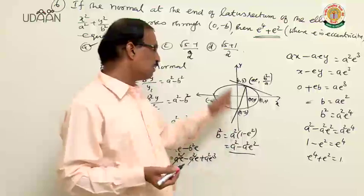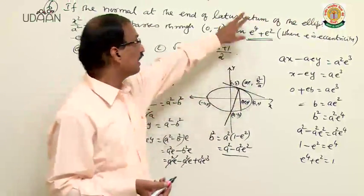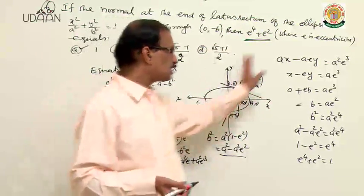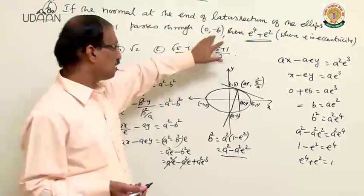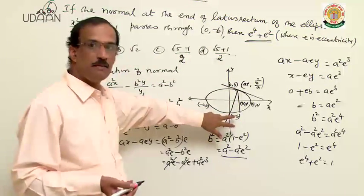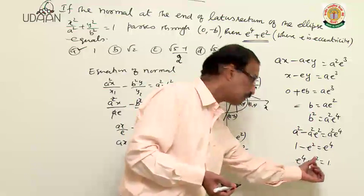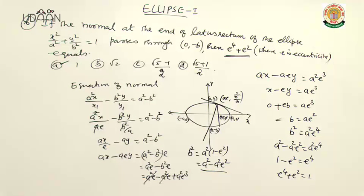To summarize: we found the equation of the normal at the latus rectum endpoint (ae, b²/a), which passes through the minor axis endpoint (0, -b), giving e⁴ + e² = 1. Today we have seen questions based on the basic concepts of ellipse. I hope the concepts and questions were understood very well. Thank you.